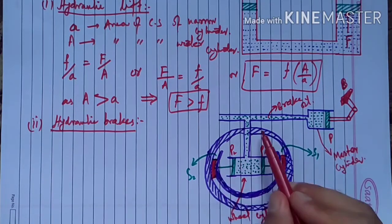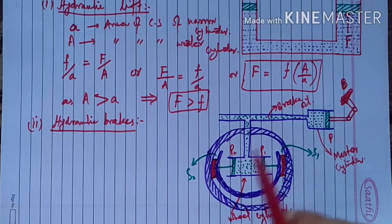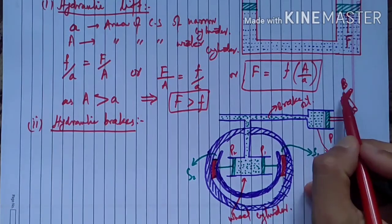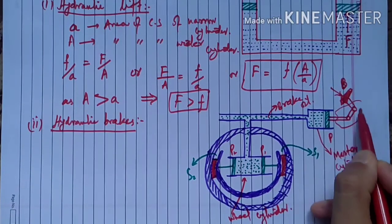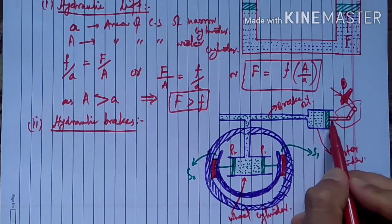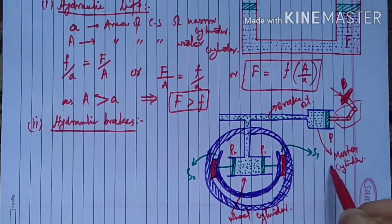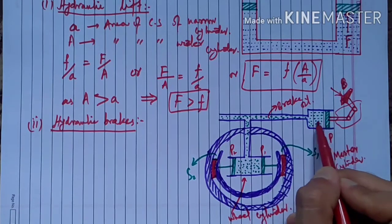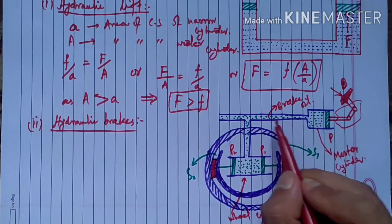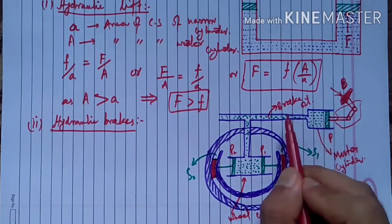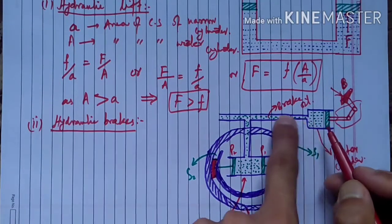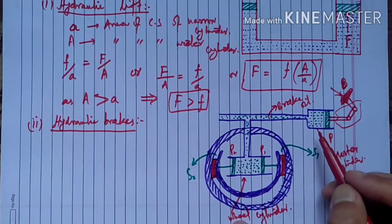The wheel cylinder is attached with two pistons, P1 and P2, and there are brake shoes S1 and S2 connected to the wheel. When you press the brake pedal — which works as a lever — it pushes the master cylinder piston, which pushes the brake oil. This increase in fluid pressure is transmitted through the brake oil, creating pressure at the wheel cylinder.